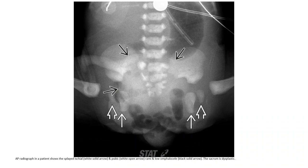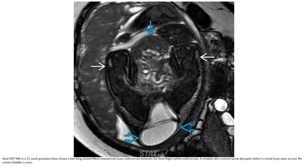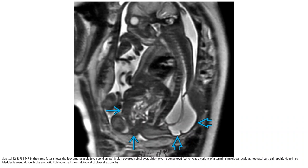The sacrum is dysplastic. SSFSE MRI in a 31-week gestation fetus shows a low-lying bowel-filled omphalocele. Between the fetal sides, a complex skin-covered spinal dysraphic defect is noted. No urinary bladder is seen, although the amniotic fluid volume is normal. This is consistent with the type called Cloacal Exstrophy.